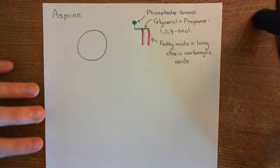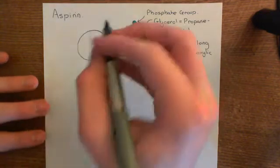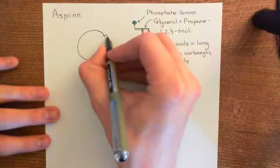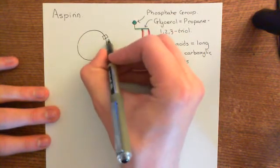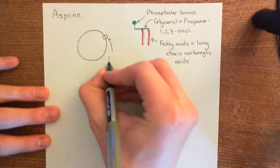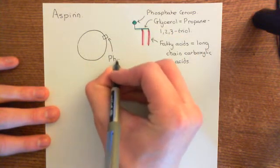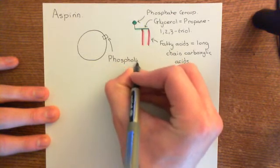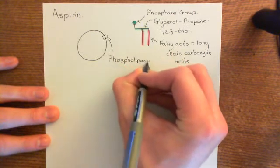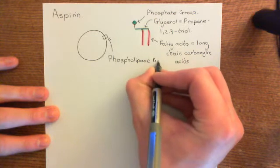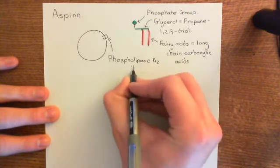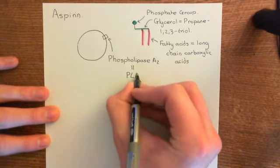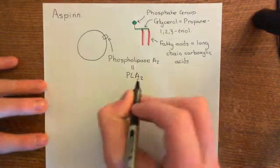If you want to produce thromboxane A2, what you do is start activating an enzyme in the phospholipid bilayer known as phospholipase A2, often abbreviated to PLA2. The activation process of platelets will lead to the activation of phospholipase A2.